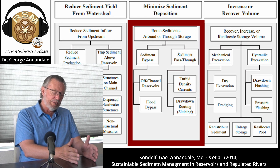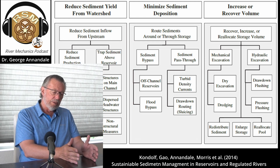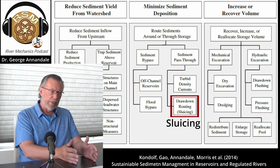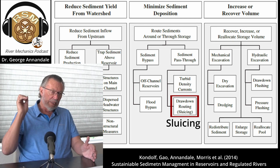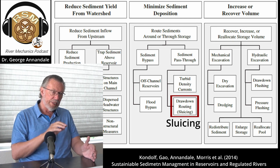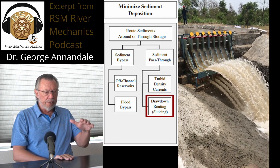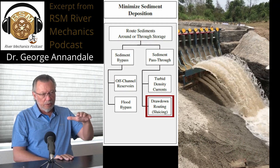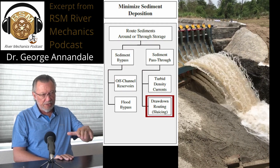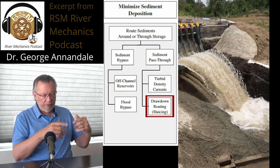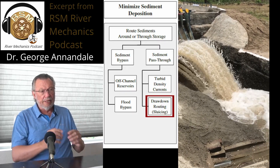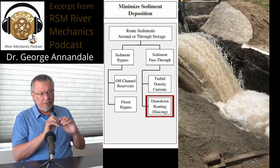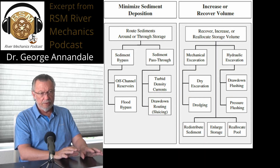One is what is called sluicing. When you implement that is when the flood season starts. The flood comes in and you lower the water surface elevation in the reservoir so you can keep the flow velocities high and you try and pass as much sediment through as possible. That's one way.